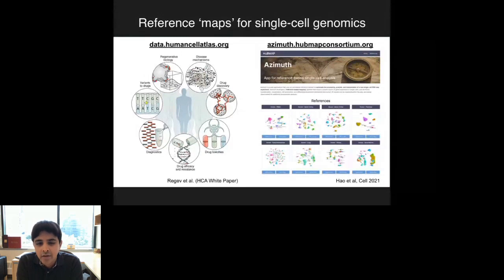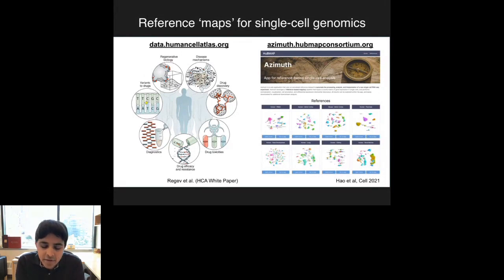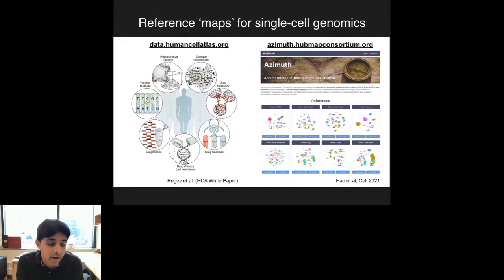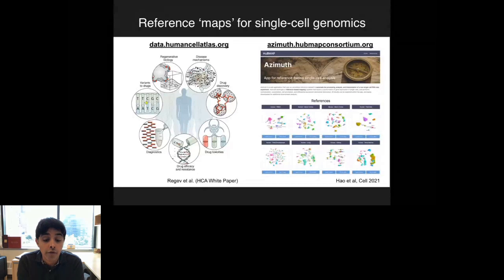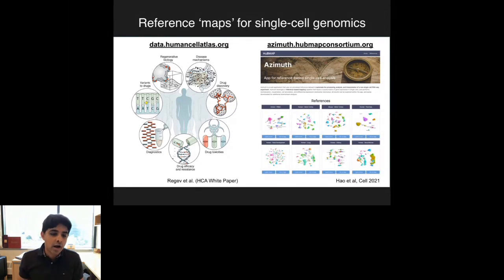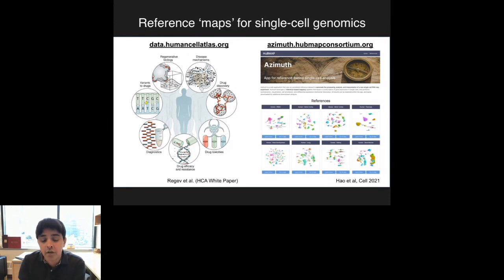We envision Azimuth as a BLAST-like tool, but for single-cell data. With BLAST, you go to a web page, type in your genomic sequence, and it automatically maps it to a reference. We want to do the same thing for single-cell data. You can go to azimuth.hubmapconsortium.org, upload just an unnormalized counts matrix of your single-cell experiment, and it will rapidly map that dataset to one of our references in the human body. You automatically process, analyze, and annotate each cell, and visualize and compute differentially expressed genes for all cell types present in your sample.